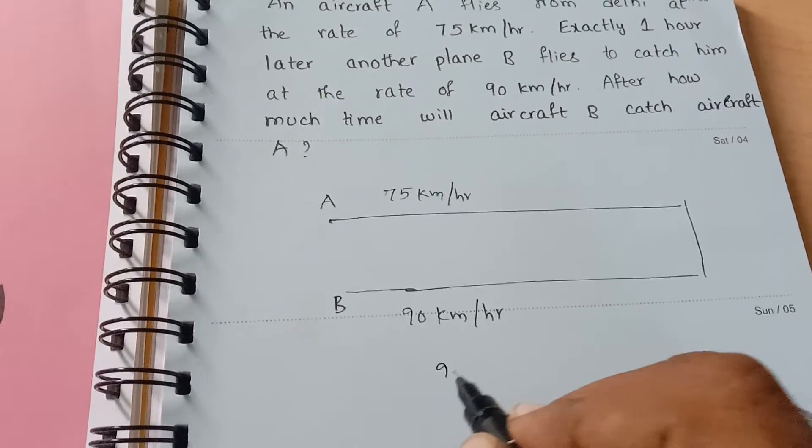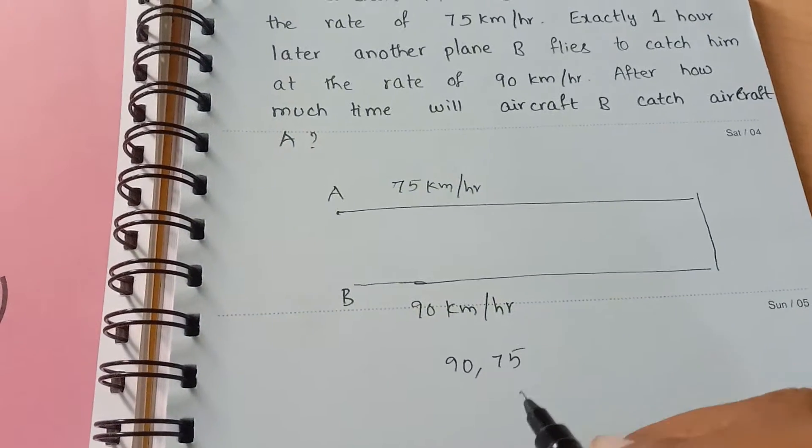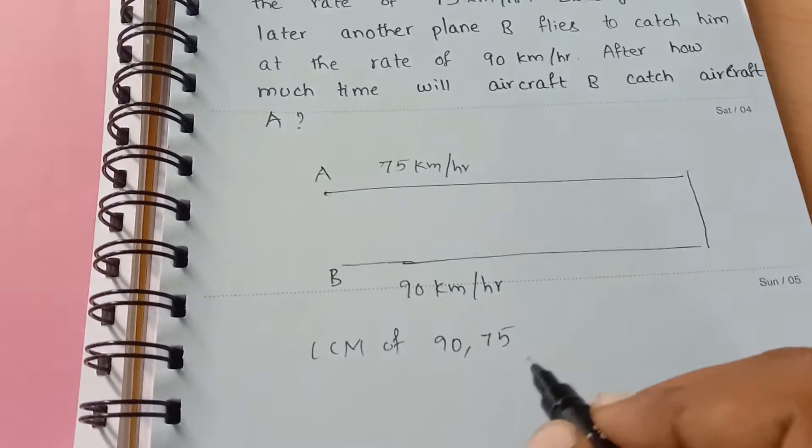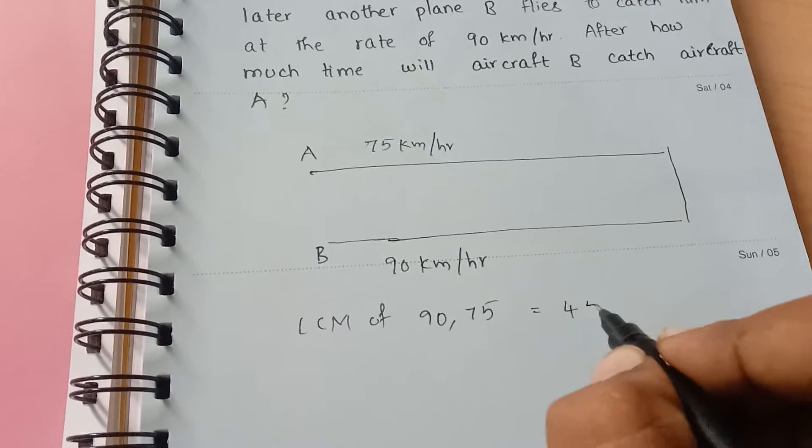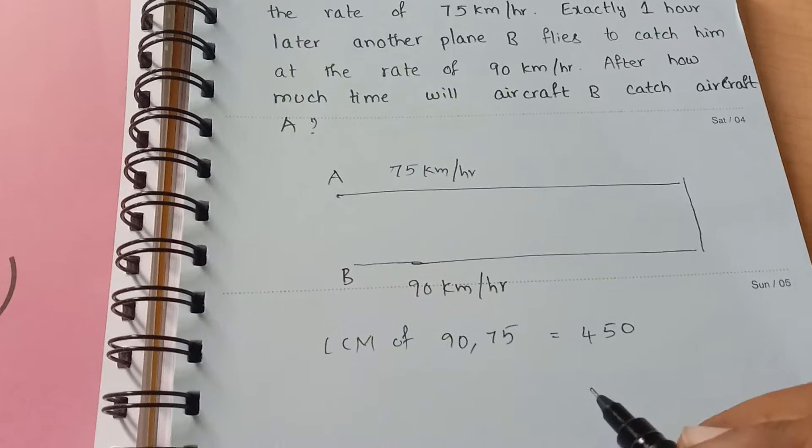Now take LCM for 90 and 75. If you take LCM for 90 and 75, it equals 450. You can check it, you can calculate it.